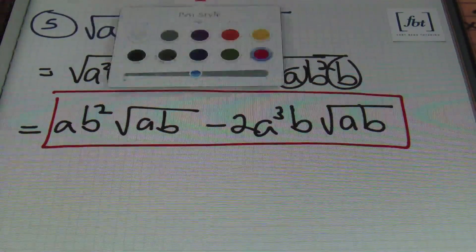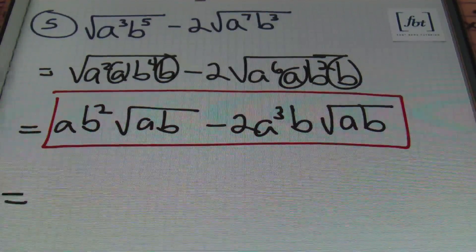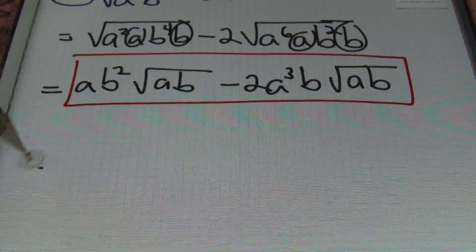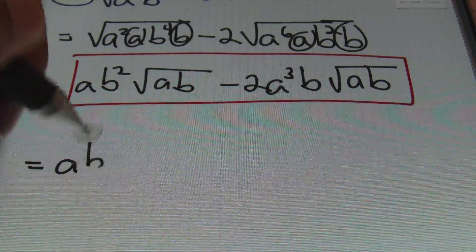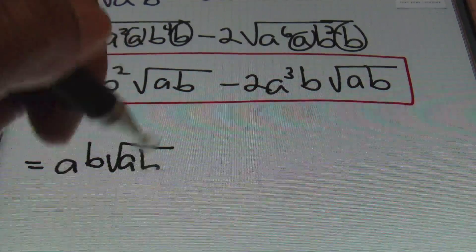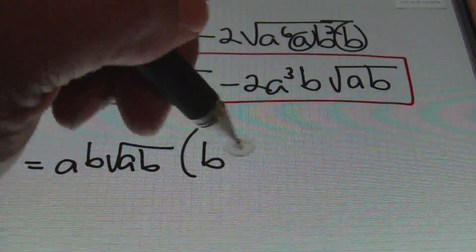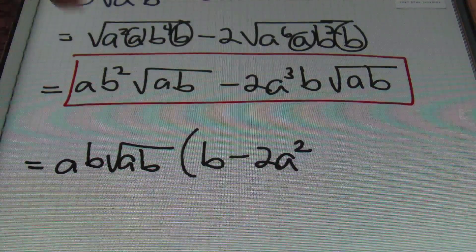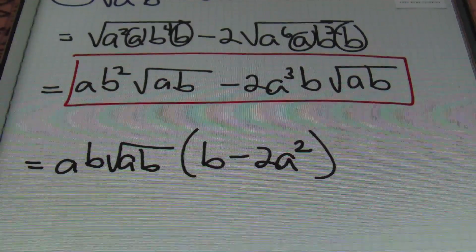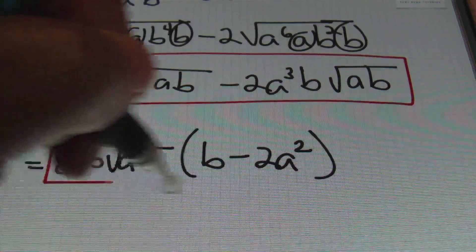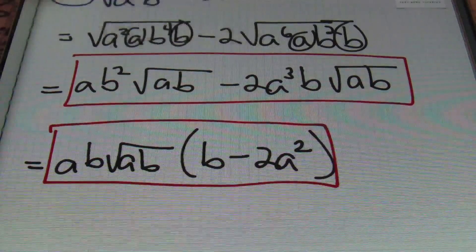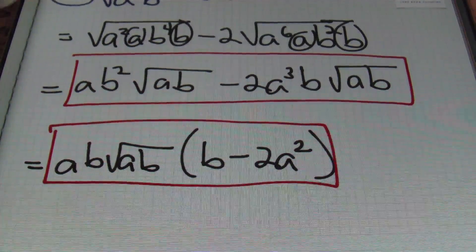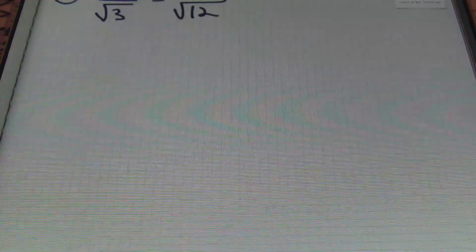So this expression as written is your answer. However, just like in the previous problem, you could factor out a GCF and write it differently. I can factor out ab times the square root of ab, leaving b minus 2a². These are two valid forms of the answer — one just leaves unlike terms as-is, the other factors out the GCF.